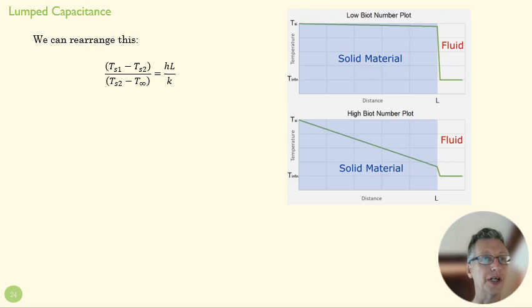We rearrange that. The difference between the internal wall over the temperature difference between the external wall. Now remember, in lumped capacitance, we're assuming that internal temperature difference is going to be small. So we want this value to be small if lumped capacitance is going to work. And it's equal to hL over k.